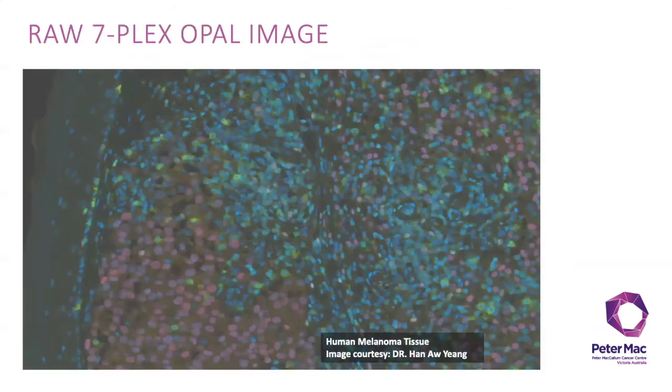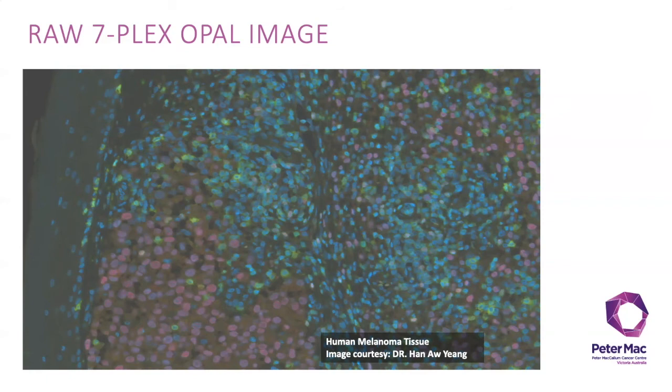The following slide shows a raw opal image of an FFPE piece of human melanoma tissue stained with an immune panel comprising of six antibodies. This is an image overlay of the 15 images acquired by the Vectra LCTF camera which captures fluorescent spectra at 20 nanometer wavelength intervals from 420 to 720 nanometers with identical exposure times. These captures are then combined to create a single stack image which retains the unique spectral signature of all of the markers present in your multiplex IHC panel.